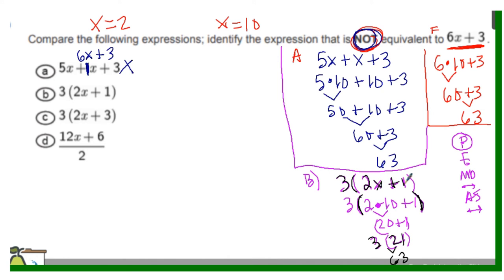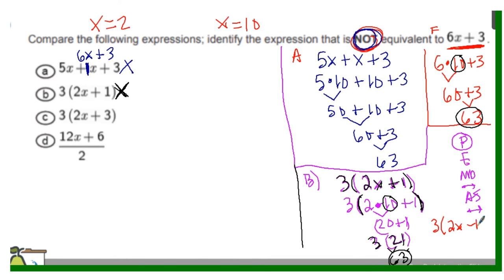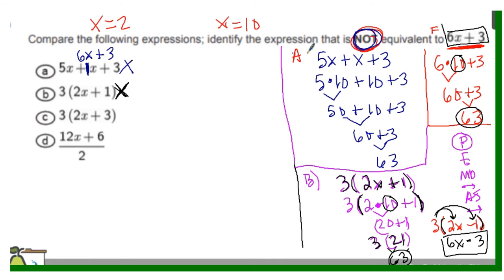Then 3 times 21 equals 63. Since option B gives 63 when x equals 10, it is equivalent to the original. If you use the distributive property, you can distribute the 3 into both terms: 3 times 2x is 6x, and 3 times 1 is 3, giving 6x plus 3 — equivalent to the original. But if you're not comfortable with the distributive property, substitution works just as well.